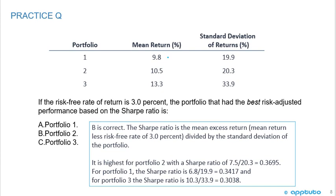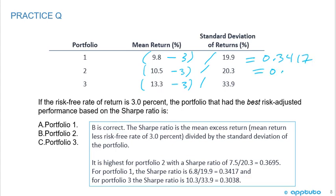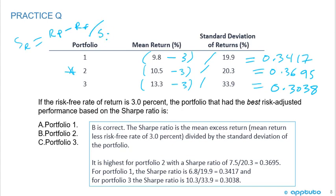Taking each portfolio's return minus the 3% risk-free rate and dividing by the standard deviation: Portfolio 1 gives 0.3417, Portfolio 2 gives 0.3695, and Portfolio 3 gives 0.3038. Portfolio 2 has the highest Sharpe ratio. The Sharpe ratio is portfolio return minus the risk-free rate divided by the standard deviation of returns, and we want a higher value. That's the last slide for this LOS.